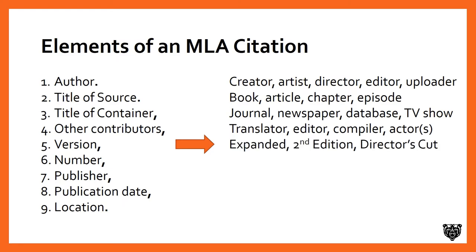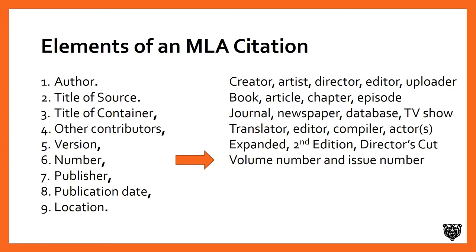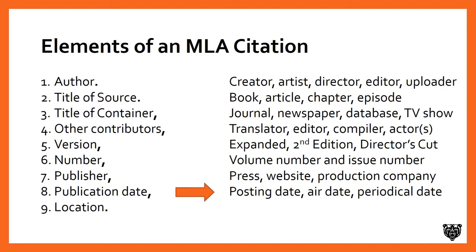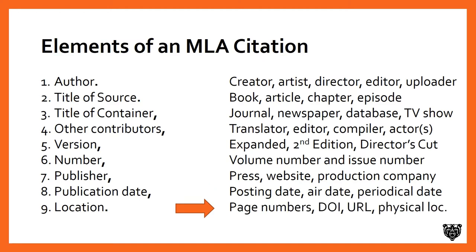We want to actually cite the version of the work we're using, so here we indicate whether it was the expanded edition, second edition, or a director's cut DVD. The number element is really useful for periodicals — this is where we indicate the volume number and issue number. The publisher could be the academic press, the website, or a production company of a film. The publication date can be a posting date, an air date, or the actual date published in the journal. Finally, for location, this is where you put your page numbers. If it's a web resource, you use a DOI or URL — the DOI preferred. You can also indicate a physical location if, for example, you're citing an artwork in a museum.